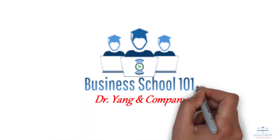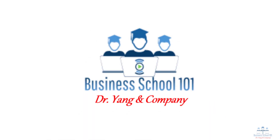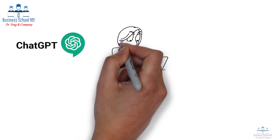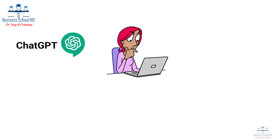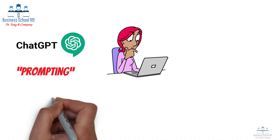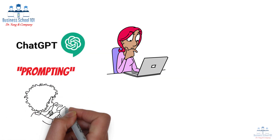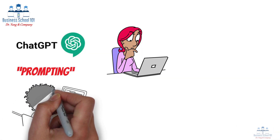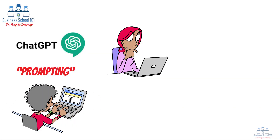Hello everyone, welcome to Business School 101. Engaging effectively with AI tools like ChatGPT hinges on how you communicate with them. This process, known as prompting, involves crafting clear and specific instructions to guide the AI's responses.